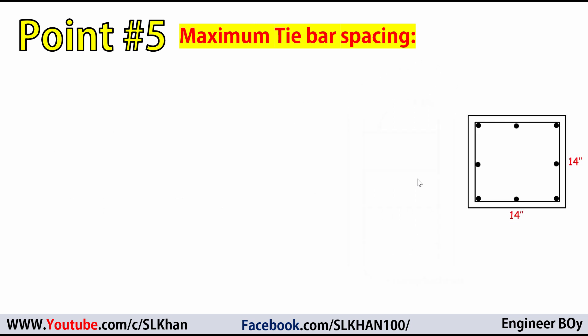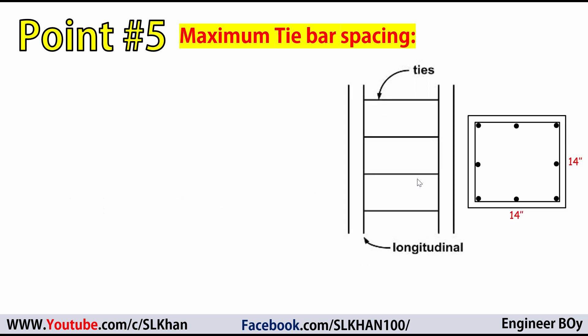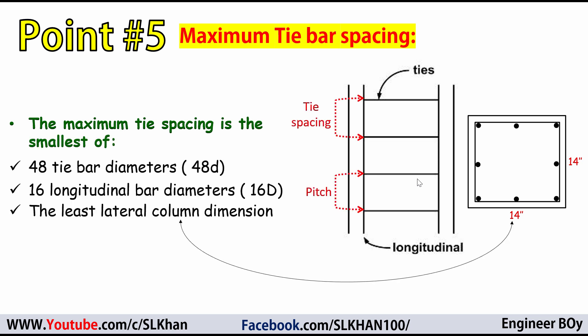Point number 5 is about maximum tie spacing, or maximum pitch. The maximum tie spacing is the smallest of these 3 values: 48 times the diameter of the tie bar, 16 times the diameter of the longitudinal bar, or the least lateral column dimension. Take the smallest of these three to get the maximum allowable tie spacing.